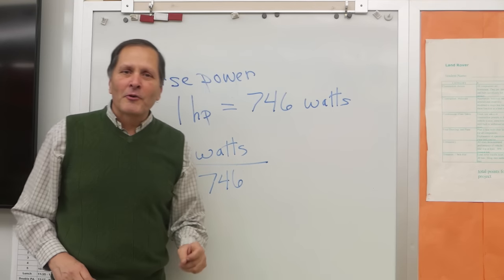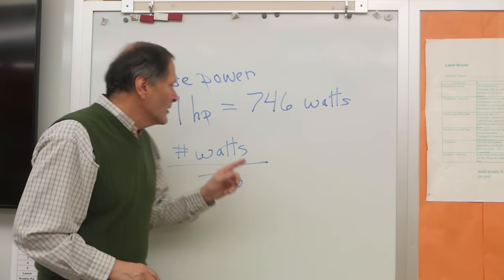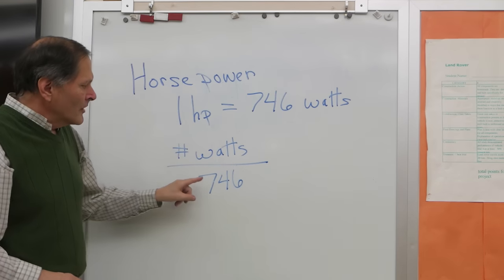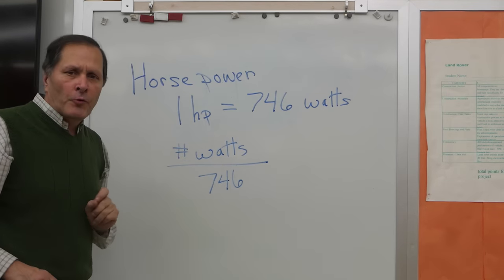Now the final step was to calculate horsepower. To do that, one horsepower is equal to 746 watts. So they took their number of watts and divided it by 746. Okay. My horsepower was 0.85. 0.4. Horsepower? 0.79. My horsepower was 0.6.